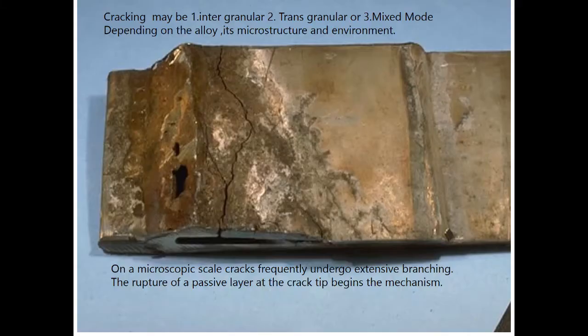The photograph shows the stress corrosion cracking of a knuckle. Cracking may be intergranular, transgranular, or mixed mode, depending on the alloy, its microstructure, and environment. On a microscopic scale, cracks frequently undergo extensive branching. The rupture of a passive layer at the crack tip begins the mechanism.